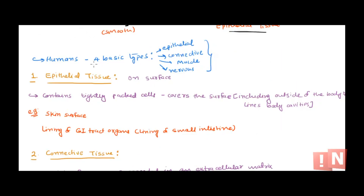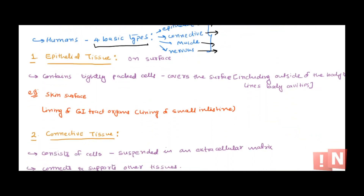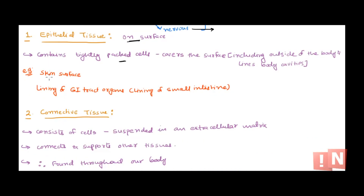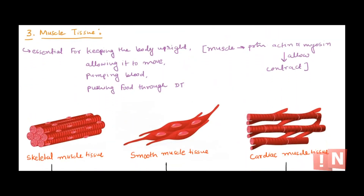In humans, we have four basic types of tissues: epithelial tissue, connective tissue, muscle tissue, and nervous tissue. Epithelial tissue forms the outer surface — for example, skin — and lines body cavities. Connective tissue, as the name suggests, is involved in support and connection of tissues. It is found in the extracellular matrix, connecting and supporting other tissues, and is found throughout the body.